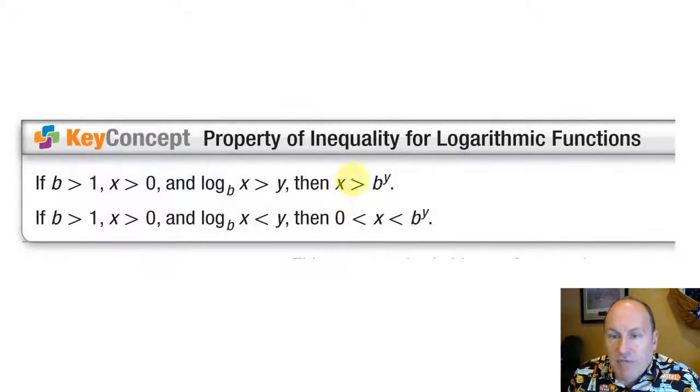So we have a similar property of inequality for logarithmic functions, just like we had a property of inequality for exponential functions. If the base is greater than 1 and x is positive, if the log base b of x is greater than y, then x has to be greater than b to the y. That's just rewriting in exponential form. If the base is greater than 1 and x is positive and the log base b of x is less than y, then x has to be between 0 and b to the y.